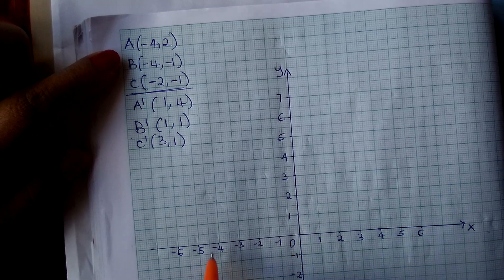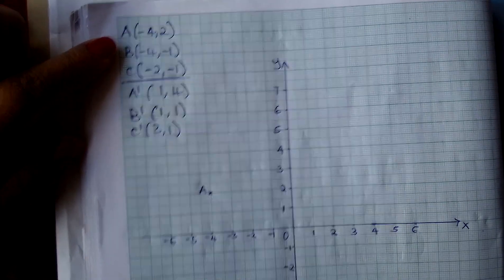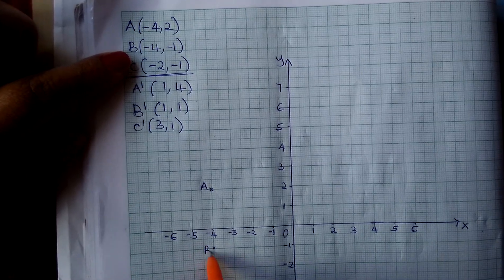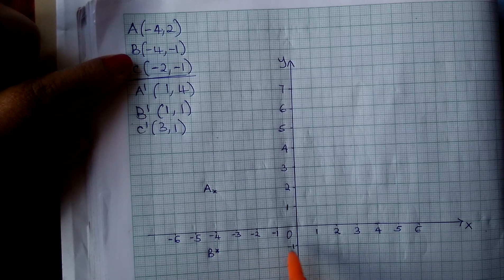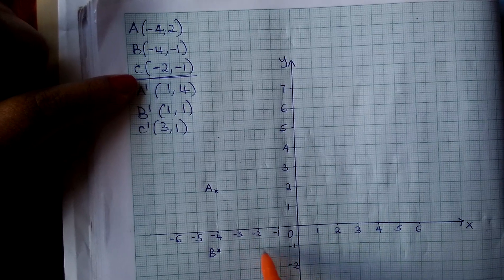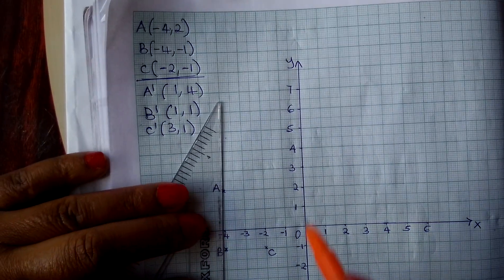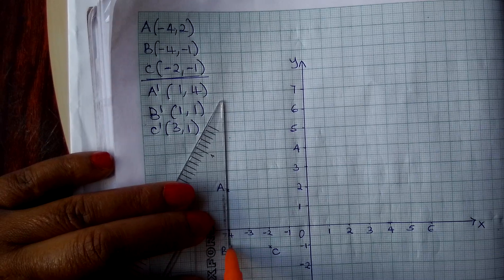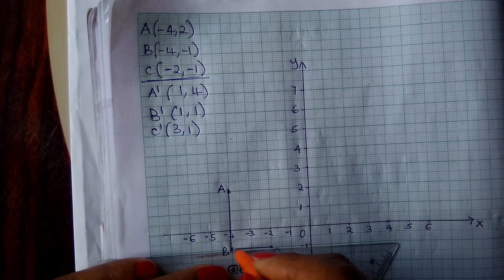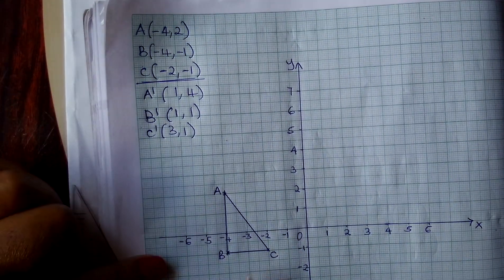We go to the object. A is at (-4, 2), so A is here. B is at (-4, -1), B is here — negative 4 on the x-axis, negative 1. Then C is at (-2, -1), so C is here. Joining the points using a ruler and pencil, we get our triangle ABC.